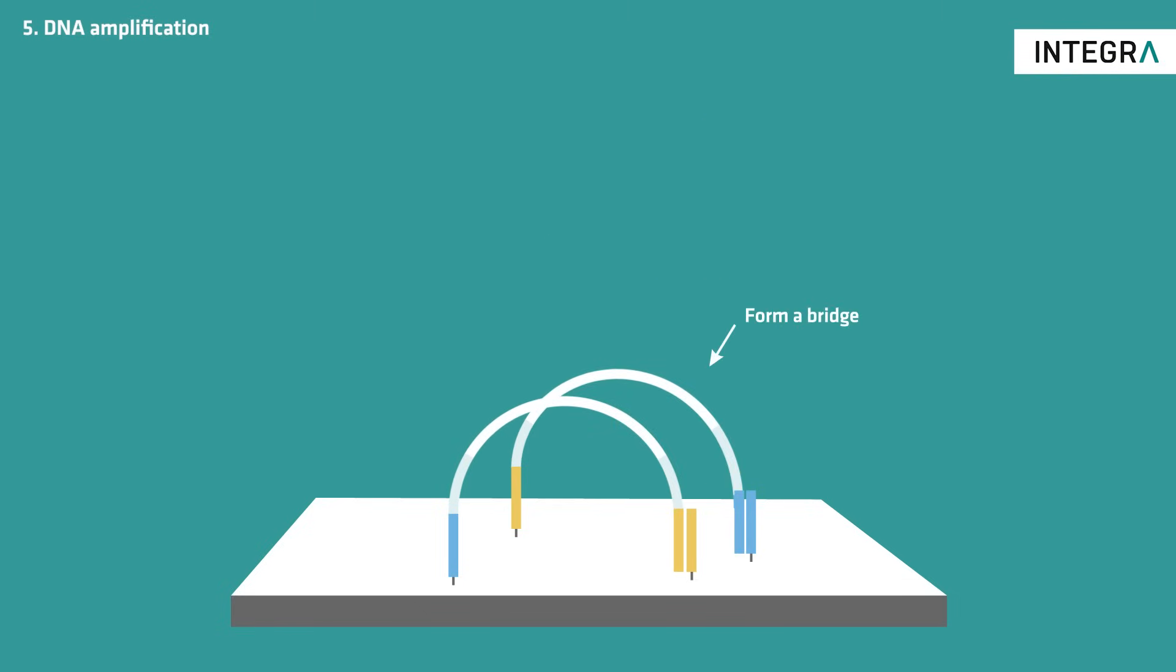This means that the immobilized sequences form a bridge to anneal to them during the annealing phase. The bridge is copied during the extension phase, and the two sequences separate from one another during the denaturation phase.